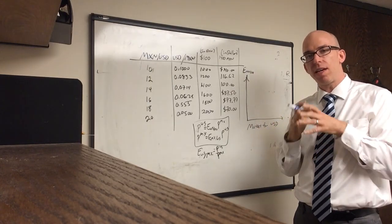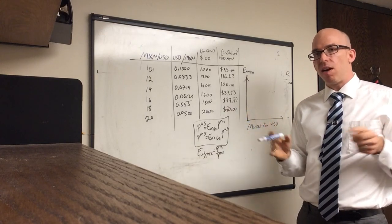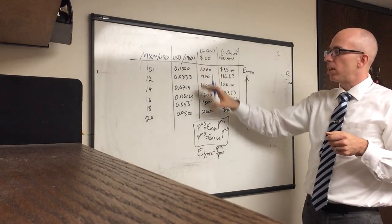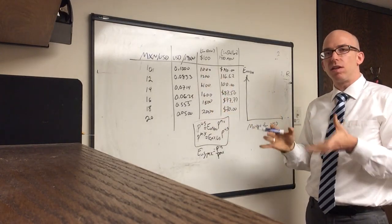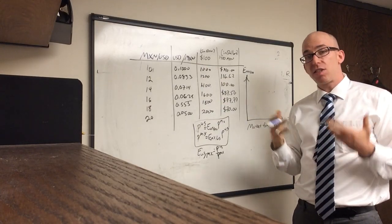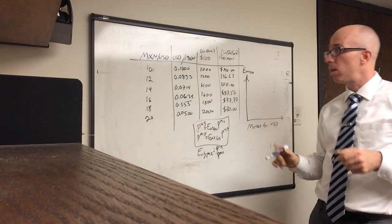The price tag in Mexico says 1,400 pesos, but how many dollars it requires to reach that depends on the exchange rate, so that's going to be a varying number. It also shows that products get more expensive as the currency value changes, and that's going to affect trade — in other words, exports and imports.